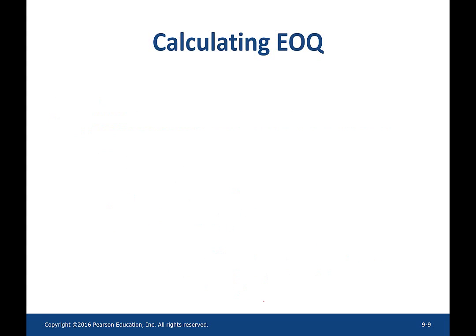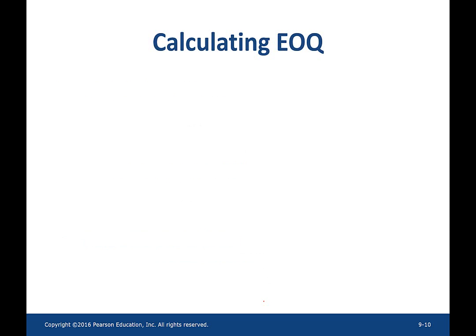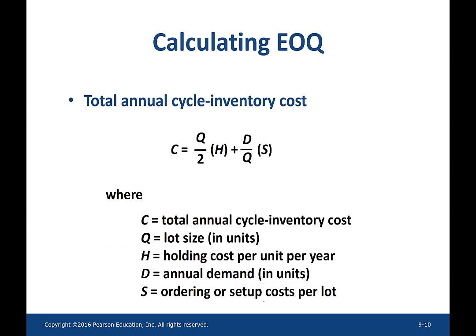Now let's look at how to calculate a few other formulas using EOQ. EOQ is the square root of 2DS over H. The total number of orders in a given time period is total demand divided by EOQ. Taking the reciprocal of the total number of orders gives you the time between orders. And the total annual cycle inventory cost equals the total ordering cost plus the total inventory holding cost: total ordering cost is (D / Q) times S, and total inventory holding cost is (Q / 2) times H. I hope you enjoyed this video — thanks for your time, I appreciate it.